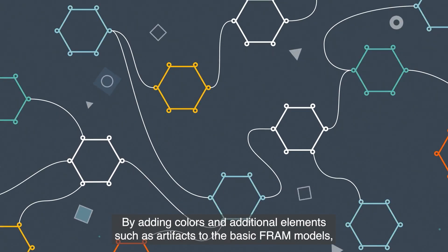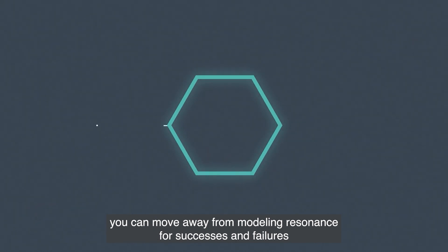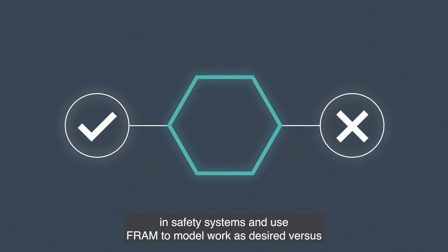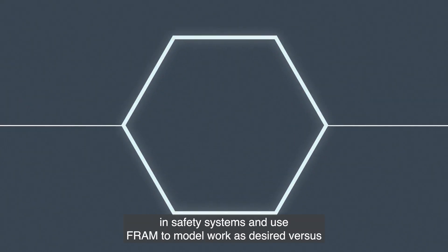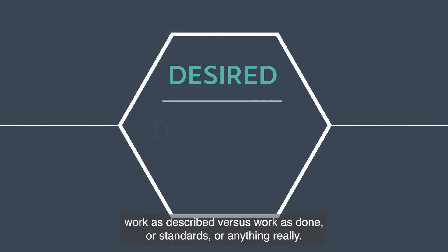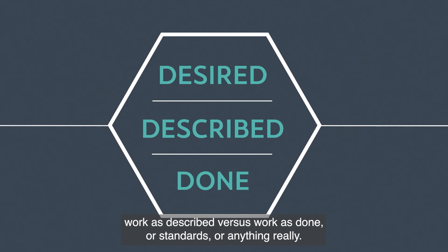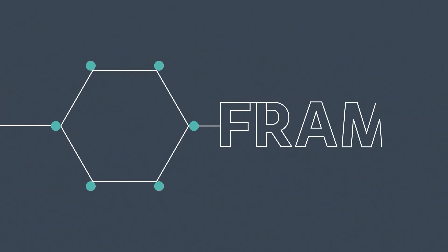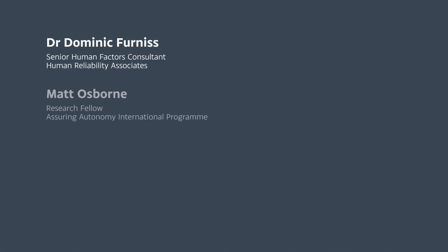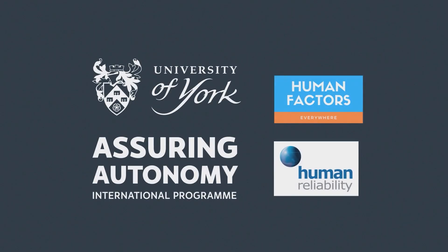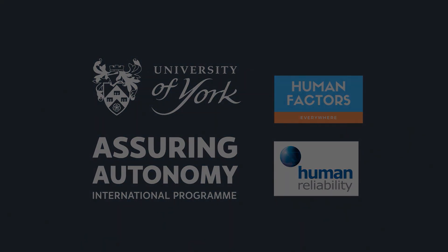By adding colors and additional elements such as artifacts to the basic FRAM models, you can move away from modeling resonance for successes and failures in safety systems and use FRAM to model work as desired versus work as described versus work as done, or standards, or anything really.